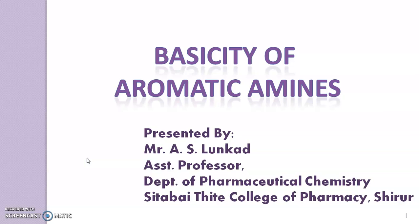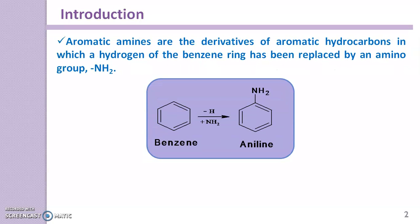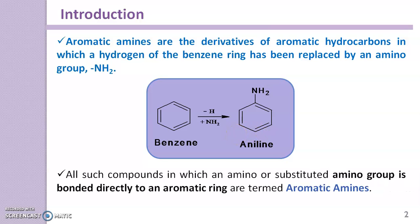Let's begin with the introduction of aromatic amines. Aromatic amines are the derivatives of aromatic hydrocarbons in which a hydrogen of the benzene ring has been replaced by an amino group, i.e., NH2 group. All such compounds in which an amino or substituted amino group is bonded directly to an aromatic ring are termed aromatic amines.